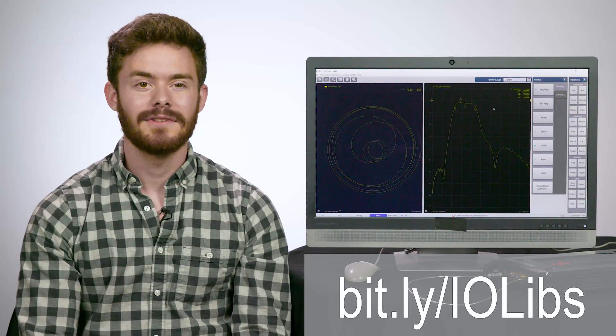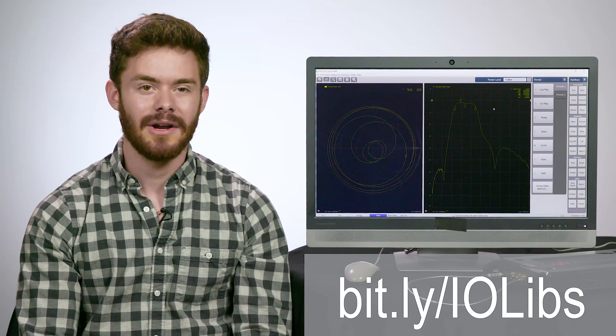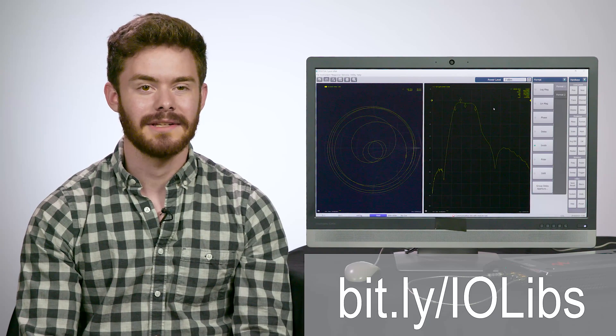First things first, before we actually dive into how to use this new type of instrument, we have to get the software downloaded and ready to use on our PC so that we can actually control this box. The first thing you have to do is download the Keysight IO libraries at the link on the screen. This is what will allow you to connect instruments to your PC and manage those connections.